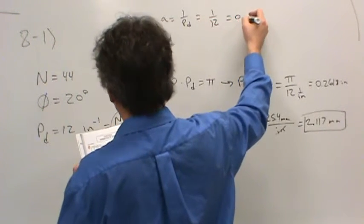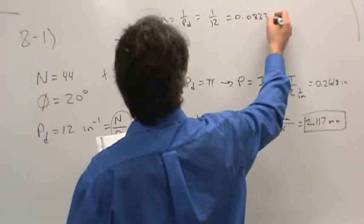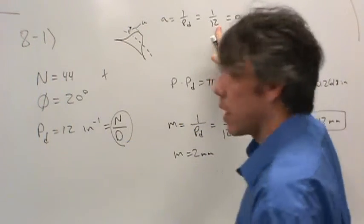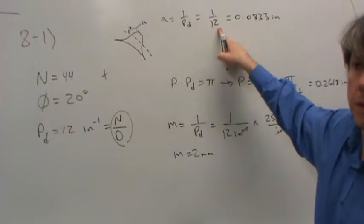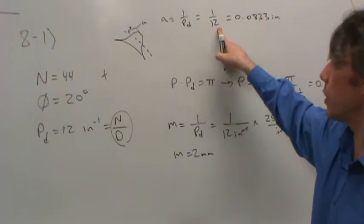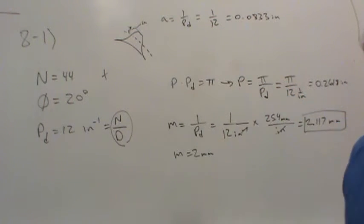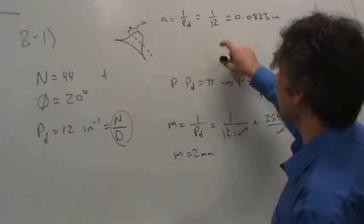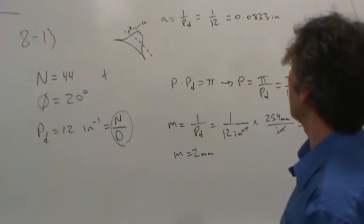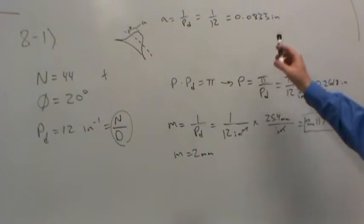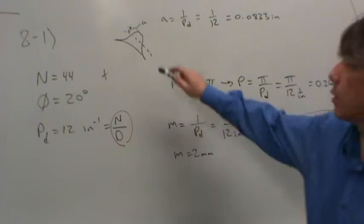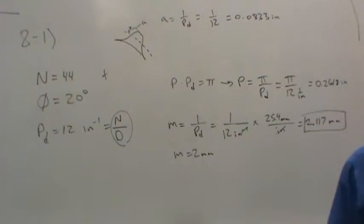Okay, so if you calculate the addendum, it's pretty straightforward. The addendum A is 1 over the diametral pitch. So that's 1 twelfth. And so that comes out to 0.0833 inches. Notice I'm beginning to drop the inverse inches. It's just understood everyone just knows the diametral pitch is measured in inverse inches. So there's the distance. It's 83 thousandths or so from the pitch circle to the top of that tooth.